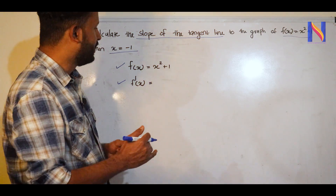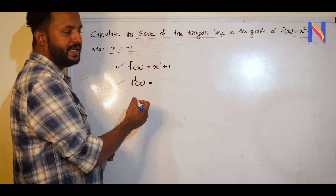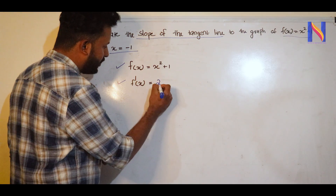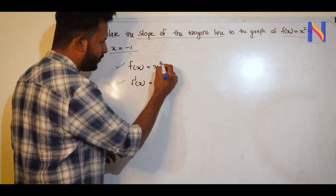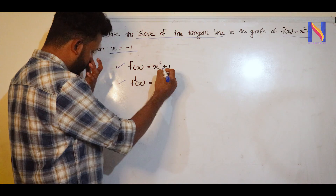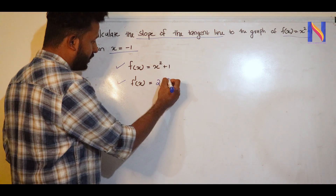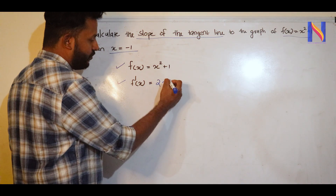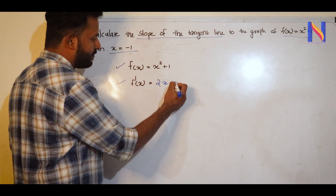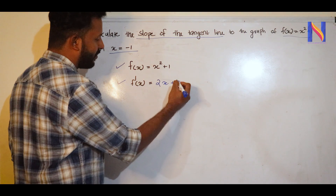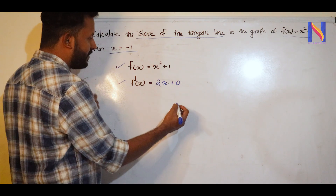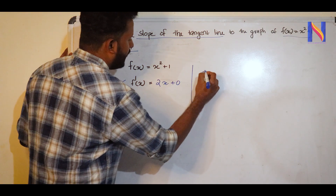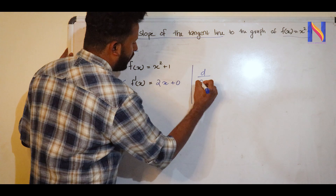So f'(x), the derivative of x² + 1. We apply the power rule: the derivative gives us 2x, and the derivative of the constant 1 will be 0.